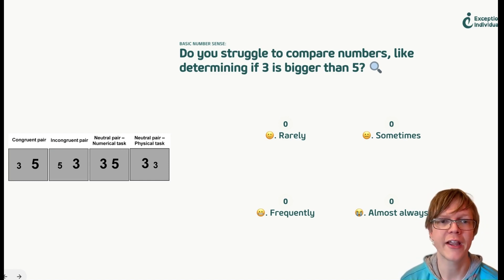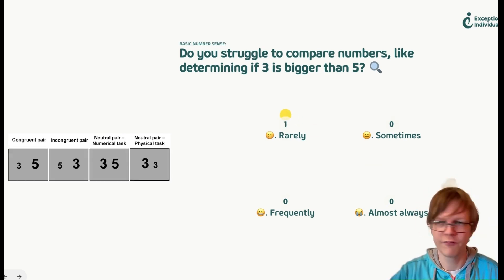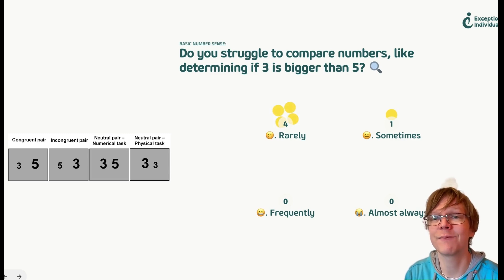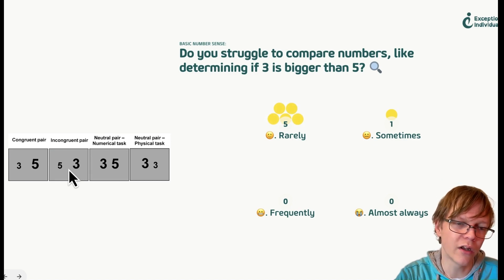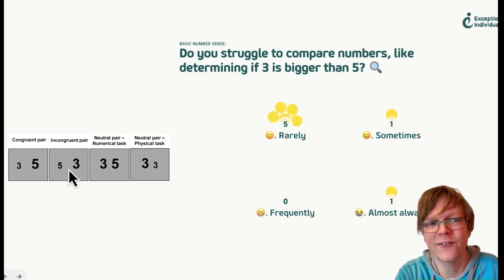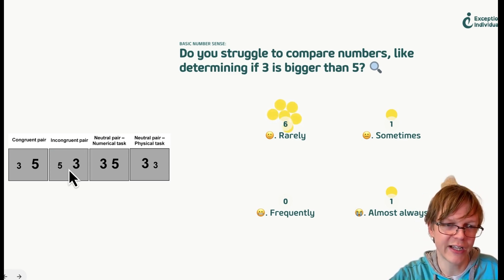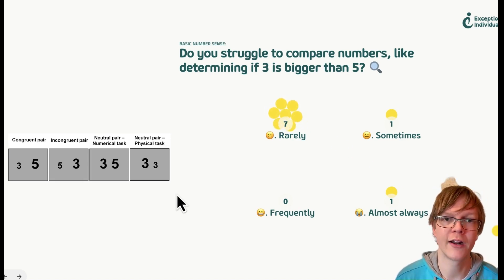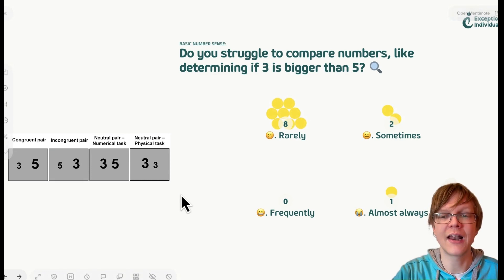Here's a question related to dyscalculia. Do you struggle to compare numbers, like determining if three is bigger than five? This is a really classic example, because clearly five is bigger than three. But is your brain reading it that way? If a number is physically bigger, you may say it's the bigger one. Our brains take additional information in order to complete the task, even if that additional information isn't overly helpful.